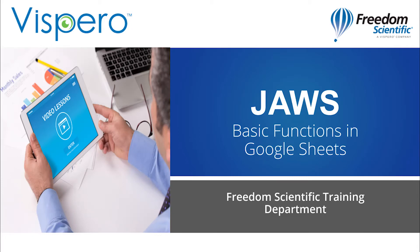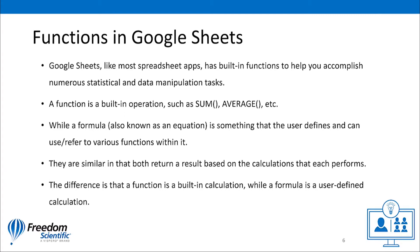Basic Functions in Google Sheets with JAWS. Google Sheets, like most spreadsheet apps, has built-in functions to help you accomplish numerous statistical and data manipulation tasks. A function is defined in Google Sheets as a built-in operation like SUM or AVERAGE, while a formula is defined by the user — it's not a built-in operation. Formulas are made up of multiple functions and can refer to functions in different cells. They both return a result based on the calculation they perform. The primary difference is that a function is built-in, whereas a formula is defined by the user. Think of functions as the building blocks that formulas are made out of.